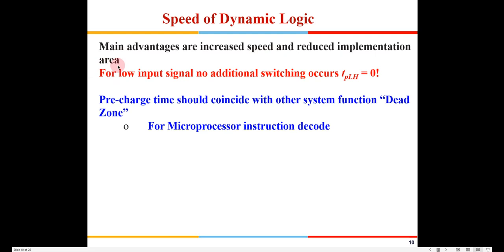Speed and area are the biggest advantages of dynamic logic. The entire PMOS pull-up network is eliminated so speed is much higher and area is also much less — these are major considerations in modern VLSI circuits. The pre-charge time is also utilized for useful work such as instruction decode in microprocessors.